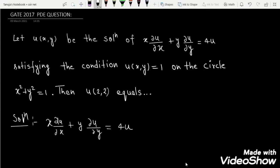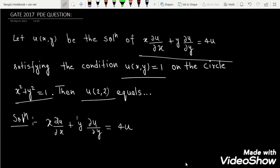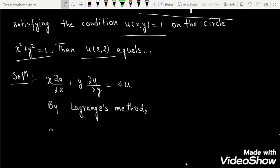Hey everyone, today I am here with the problem of partial differential equation. This is the given equation. The condition is u(x, y) equal to 1 on the circle x² + y² = 1, and we have to find u(2, 2). So let's find u first.